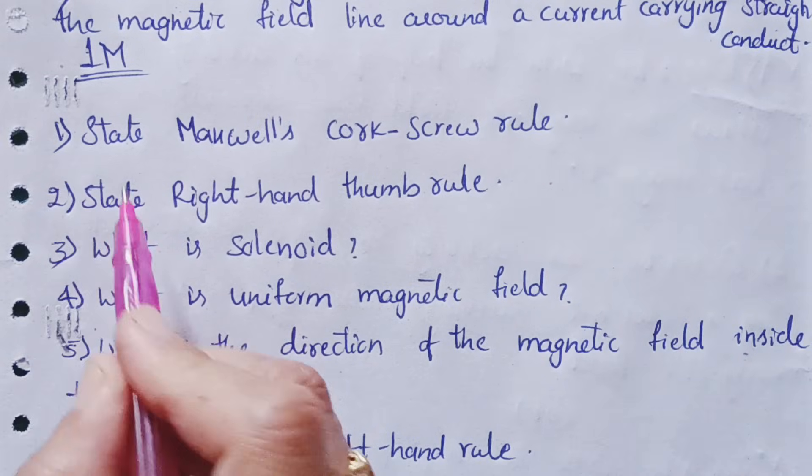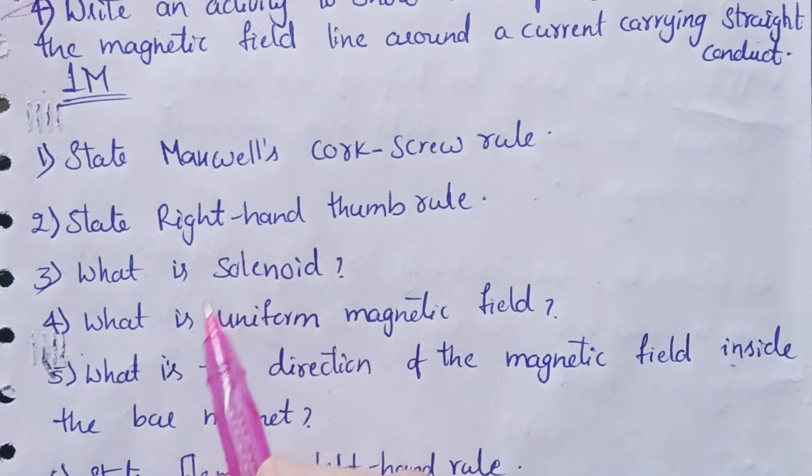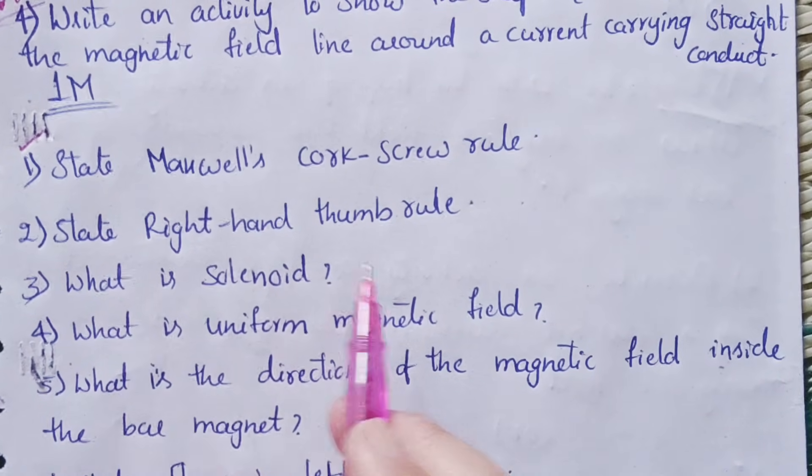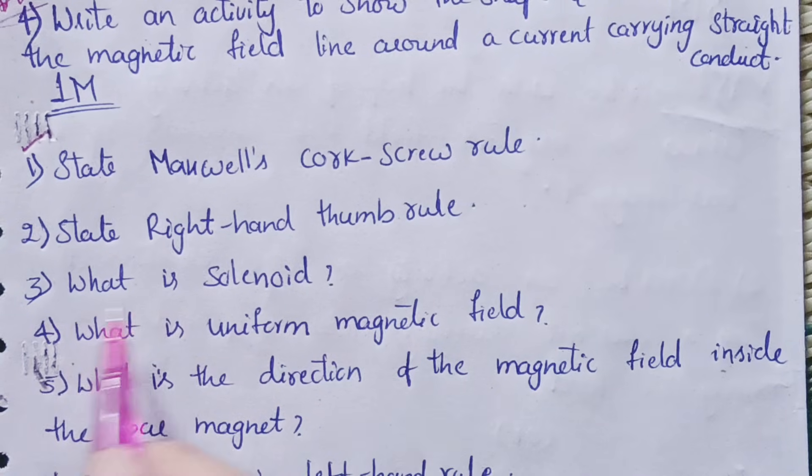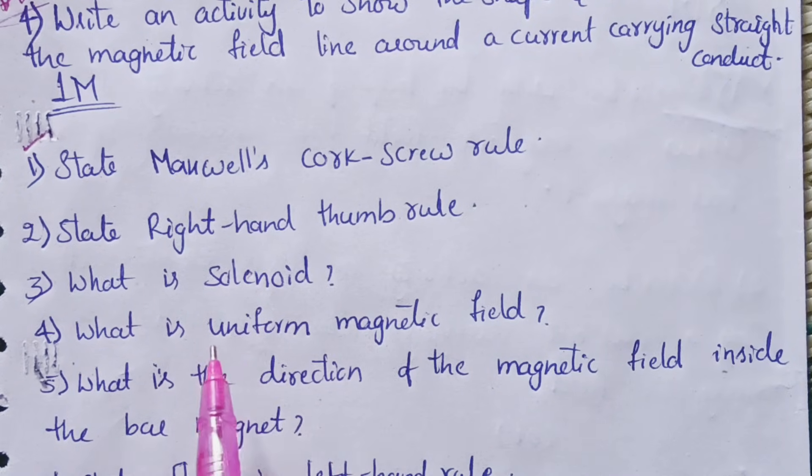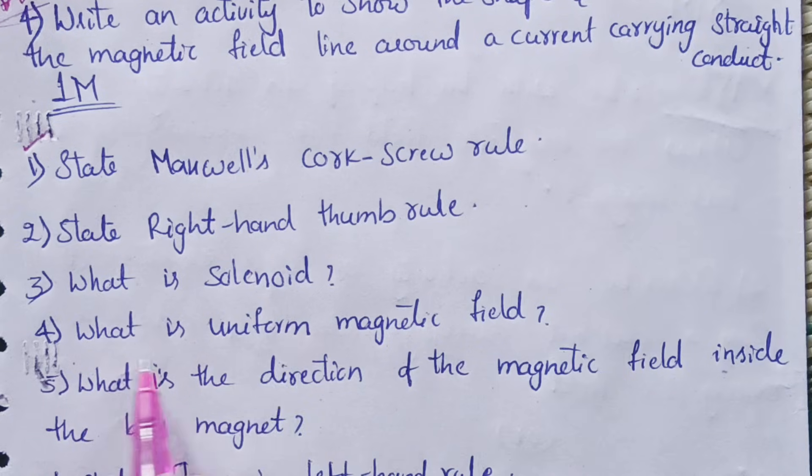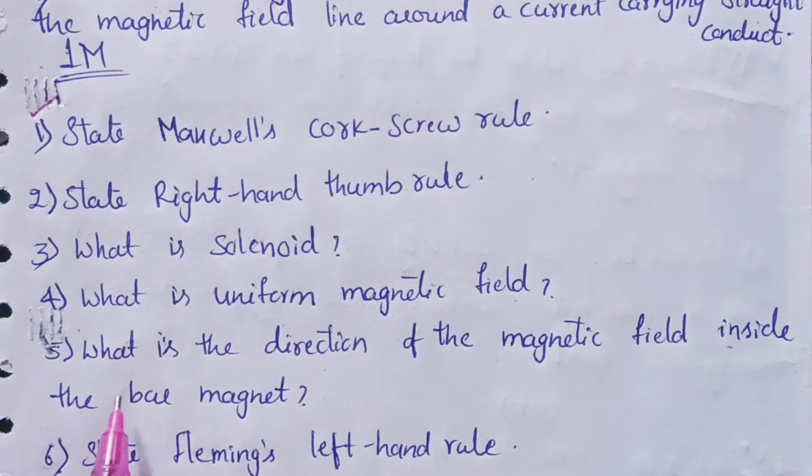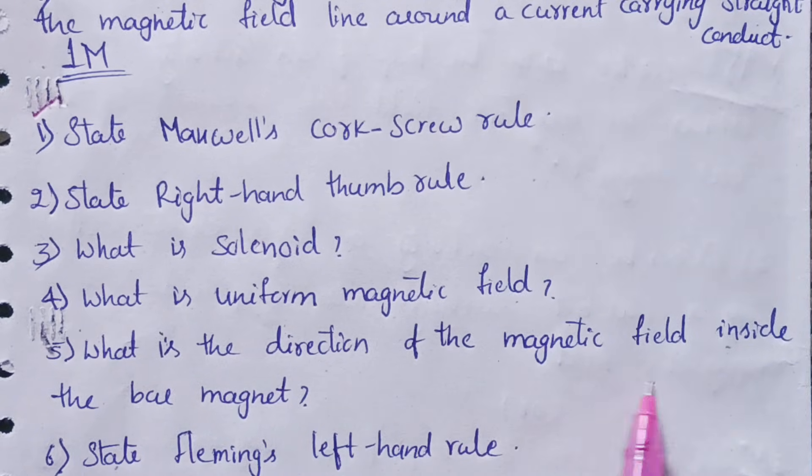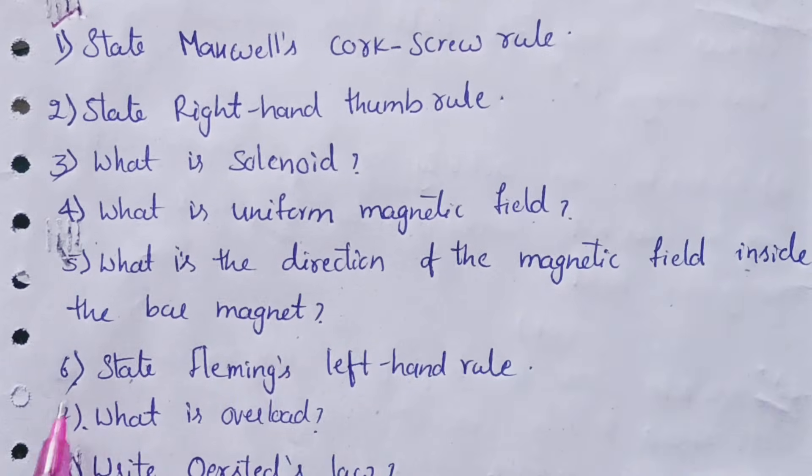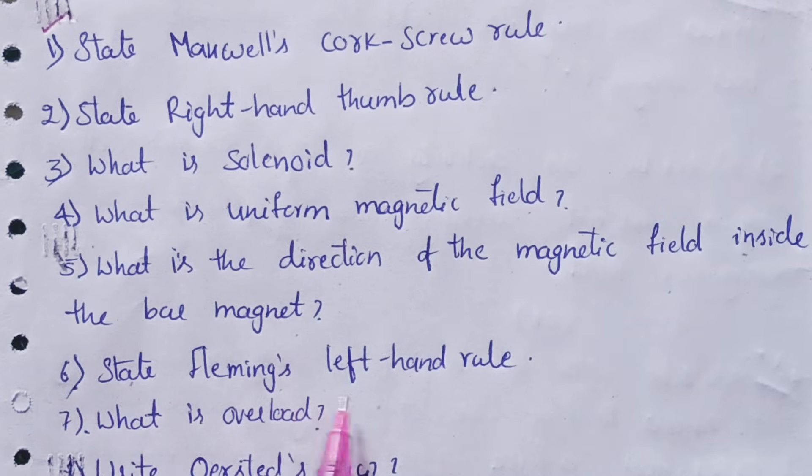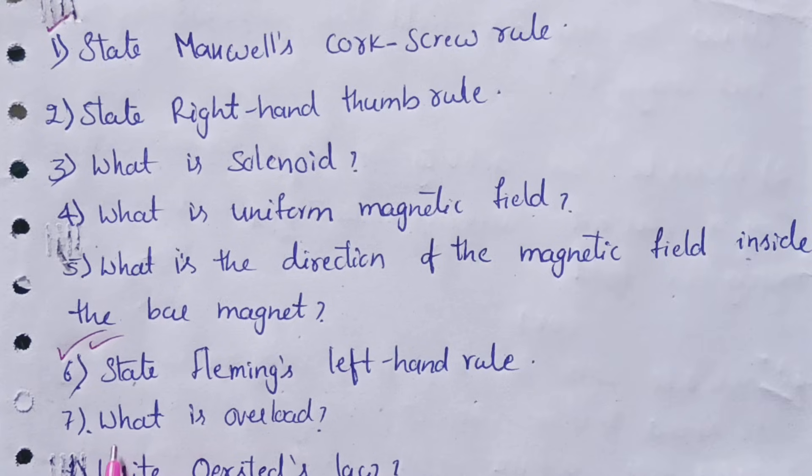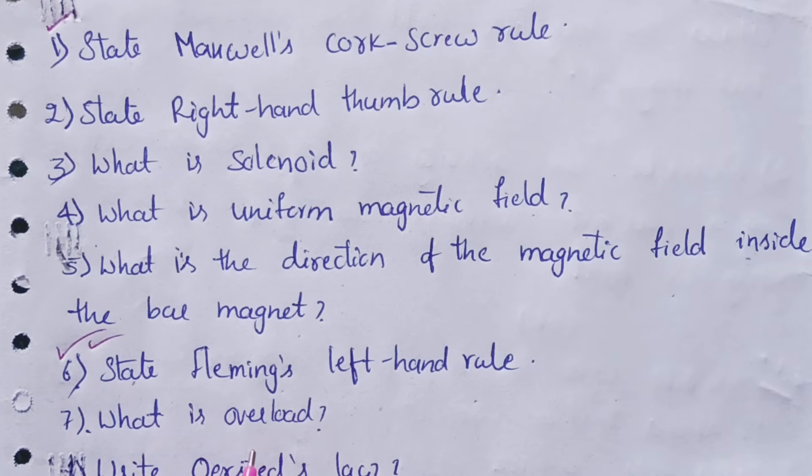There are total 9 questions, you need to go through each and everything. First question is: state Maxwell's cork screw rule. Very important. Second question is: state right hand thumb rule. Third question is: what is solenoid?